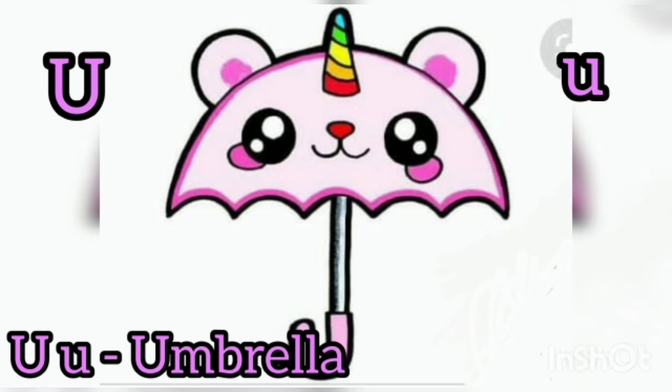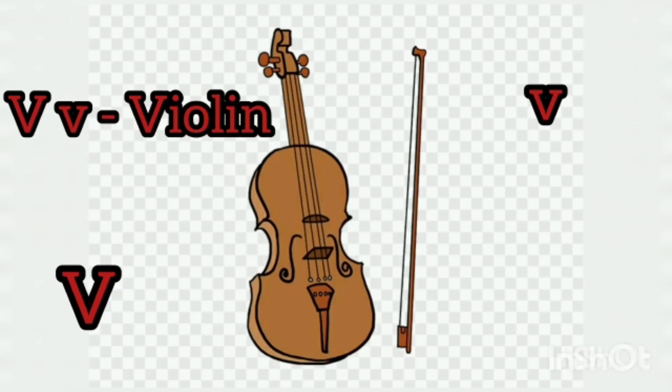U for Umbrella, Umbrella means tope. V for Violin, Violin means guitar.